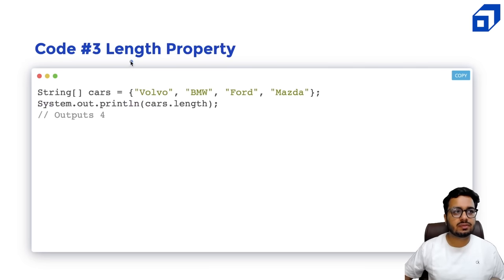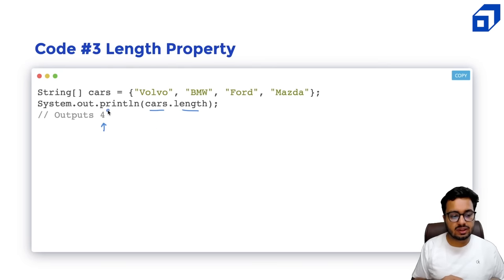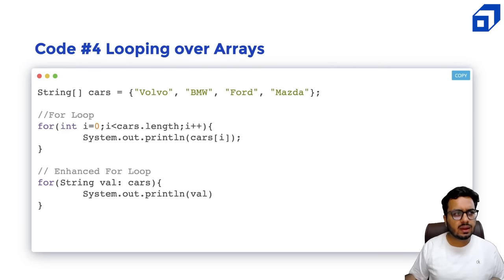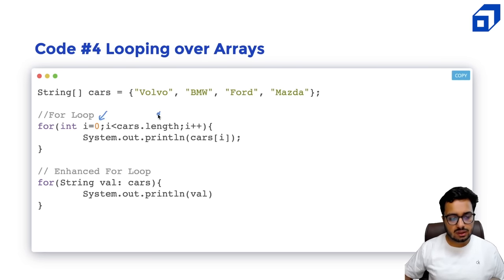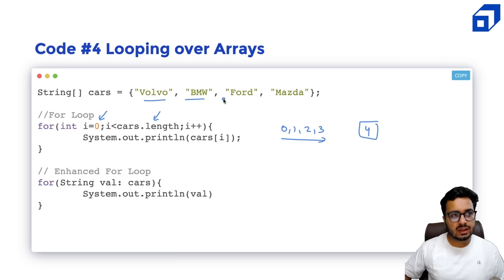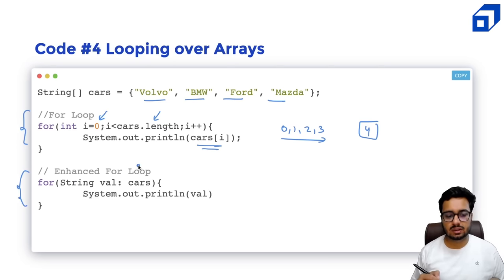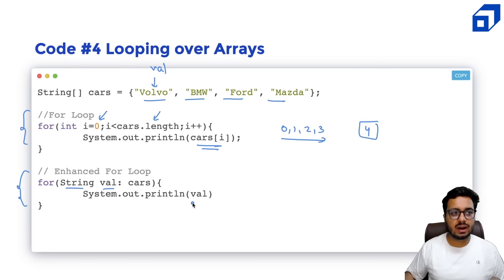All array objects have a length property. So if you say cars.length, this gives you how many objects are stored in the array or what is its size. Using the length property, you can iterate over arrays — going from index zero till cars.length, iterating over each index and printing every car. Another way is to use a for-each loop, also called an enhanced for loop: for every string value inside the cars array, you go over that value and print it.